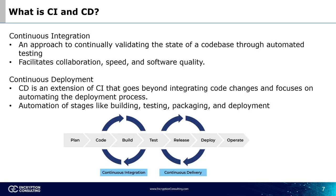We will now discuss the CI-CD pipeline and the benefits implementing it in your environment can provide to your organization. What are CI and CD? CI is continuous integration — it's an approach to continually validate the state of a code base through automated testing. It facilitates collaboration, speed, and software quality. CD, or continuous development, is an extension of CI that goes beyond integrating code changes and focuses on automating the deployment process.